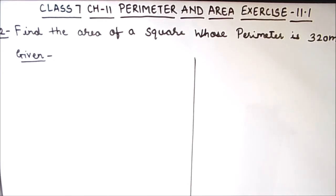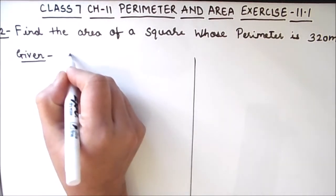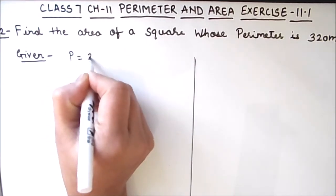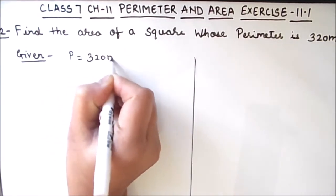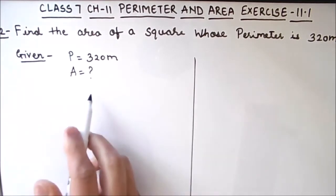The question is find the area of a square park whose perimeter is 320 meters. First of all we will write what is given in the question. Given is perimeter equals 320 meters, area we need to find out.